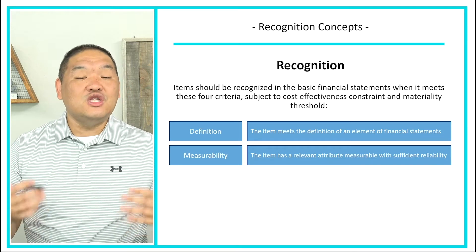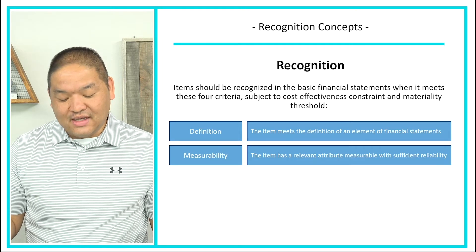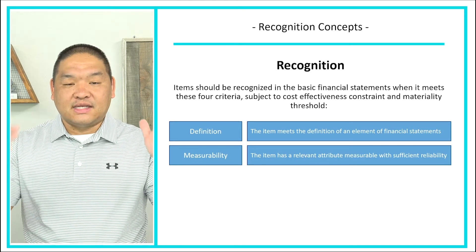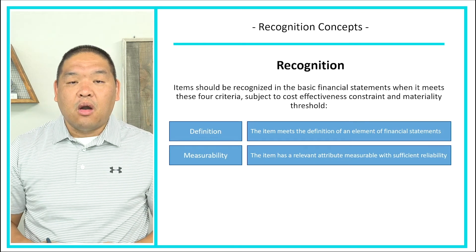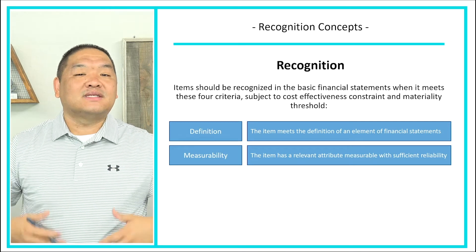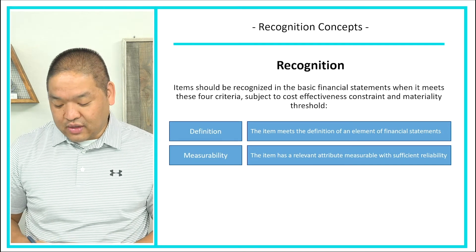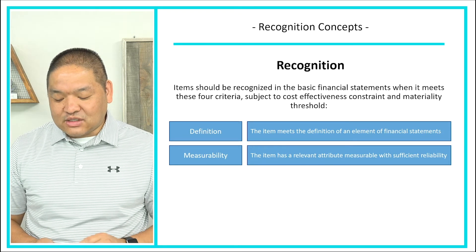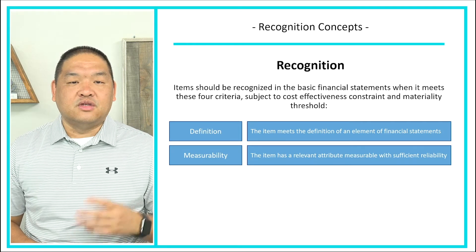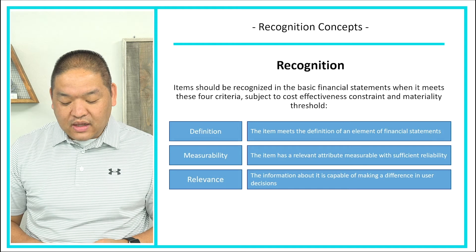We need some type of measurement — whether the contract states what it's worth, how much cash we received, or the bill we received — something must tell us the amount we need in our journal entry. The item must have a relevant attribute measurable with sufficient reliability so we can actually rely on that number. The third criterion is relevance: the information must be capable of making a difference in the user's decision.